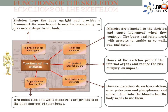2. Movement — the skeleton allows movement of the body as a whole and its individual parts. The bones form joints and act as levers, allowing muscles to pull on them to produce movement. The bones of the skeleton provide surfaces for the attachment of muscles.